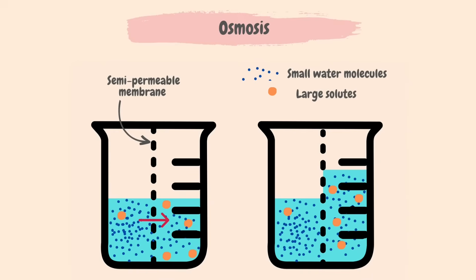This diagram can help us understand osmosis. The left-hand side of the beaker has fewer dissolved solutes, so the solution is more dilute or less concentrated compared to the right-hand side. The solutes are too large to pass through the partially permeable membrane and therefore cannot diffuse. However, water molecules can pass freely through the membrane. The molecules will travel from the region of high water potential to low water potential — from the left-hand side to the right-hand side — via osmosis.